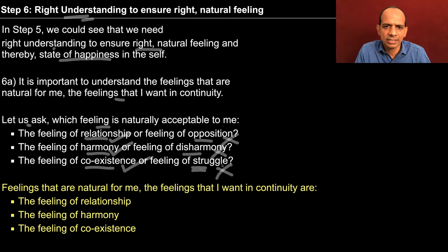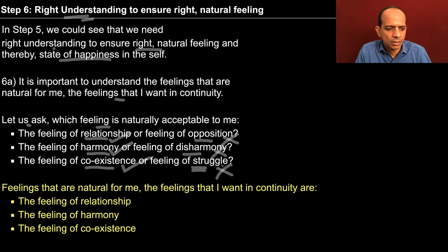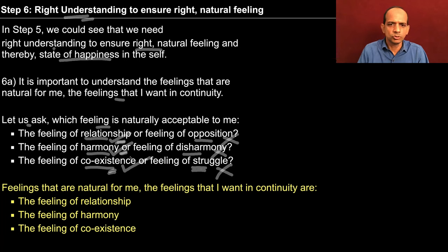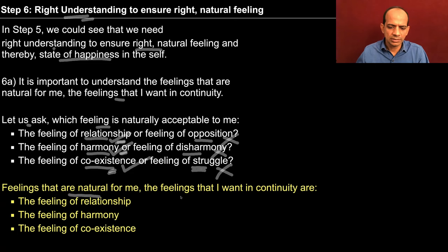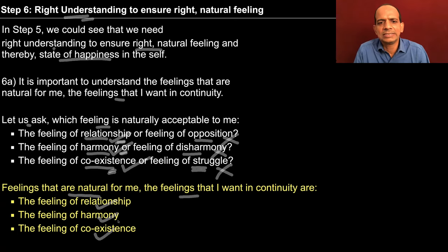We could see that I need to rightly understand. If my assumption is right, then also my happiness is going to be temporary because the assumption can change sometime later. So I need to understand and then work out. When I ask myself, take some time to observe, don't just assume. If you are able to observe, then we will conclude that the feelings that are natural for me, that I want in continuity, are feeling of relationship, feeling of harmony and feeling of coexistence. So this is the essence.